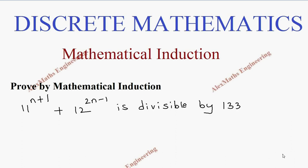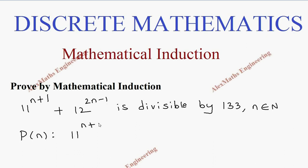Hi students, this is Alex. In this video we are going to prove by mathematical induction that 11^(n+1) + 12^(2n-1) is divisible by 133, where n belongs to the natural numbers. We name this as P(n), that is 11^(n+1) + 12^(2n-1).